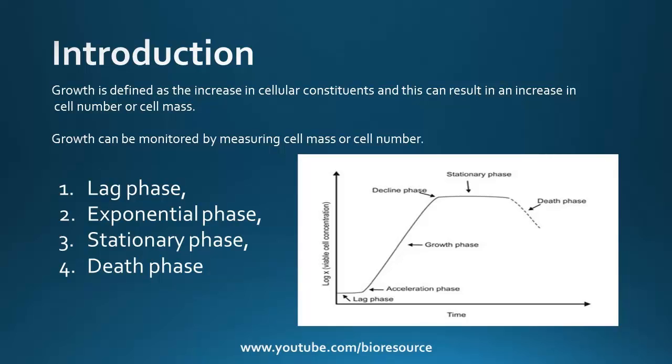Growth can be monitored by measuring cell mass or cell number. In bacteria, growth occurs in different phases. There are four different phases for bacterial growth curve.